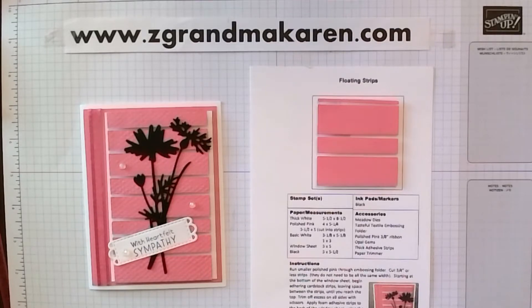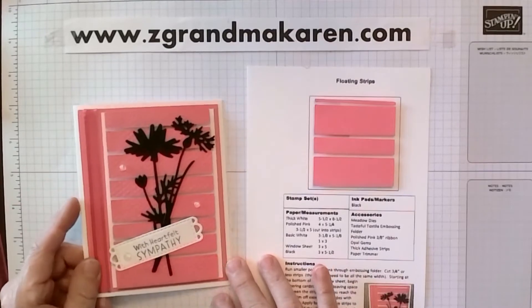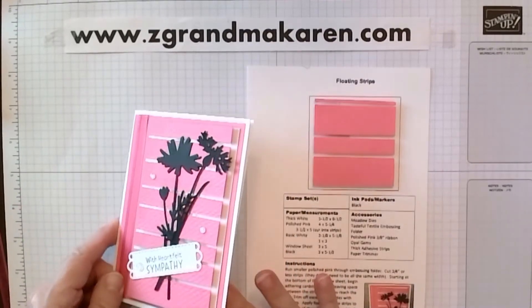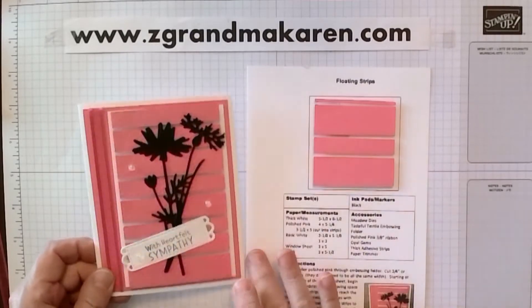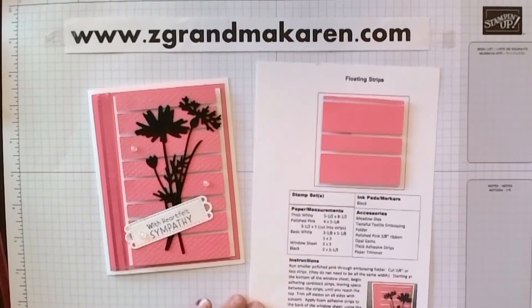Today I'm going to show you how to make this card. I'm calling this technique Floating Strips. It sort of has a 3D look and they look like the strips are floating. It'll look better when you look at the picture when it's all completed.